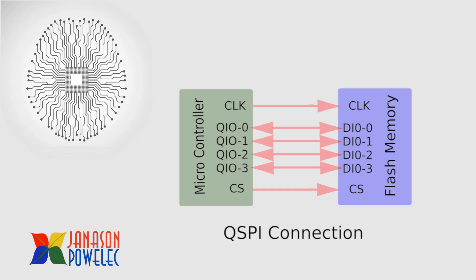Let us see the QSPI connection. It is almost similar to the SPI connection, except instead of two data lines, here we are using four data lines to transfer data. Similar to chip select, we can use many chip selects and connect to many more devices.